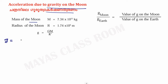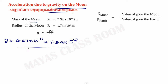If we take capital G as 6.67 into 10 raised to minus 11, the mass of the Moon as 7.34 into 10 raised to 22, divided by the radius of the Moon 1.74 into 10 raised to 6, all squared — the value comes out to be 1.62. This is the acceleration due to gravity on the Moon: 1.62 meters per second squared.